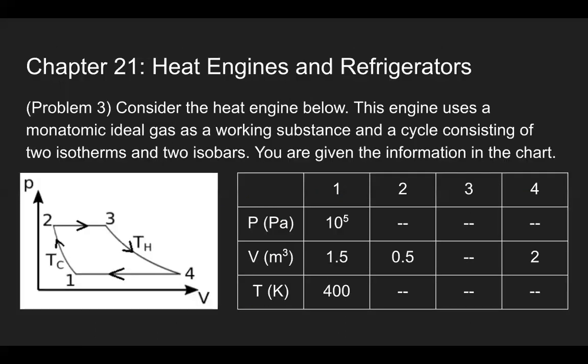Next, we'll cover chapter 21, which involves heat engines and refrigerators. This is a very lengthy problem, so let's begin. Consider the heat engine below. This engine uses a monatomic ideal gas as a working substance in a cycle consisting of two isotherms and two isobars.